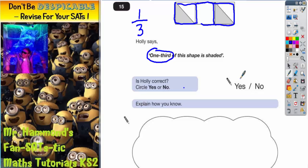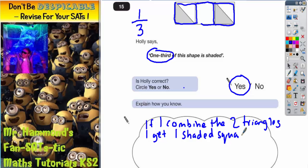So actually she is correct. So we'd have to circle yes and what you could write down is something like this. Explain how you know. You could say if I combine the two triangles I get one shaded square out of a possible three squares, this is one third and that would be a sufficient explanation.